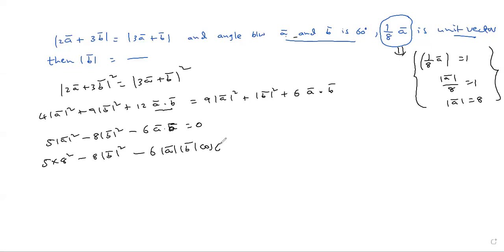5 into 8 square, minus 8 mod B square, minus 6 into 8, mod B as it is unknown, cos 60 is 1/2, equals 0.